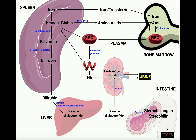The other place for bilirubin diglucuronide to go is the kidneys. There are bacteria in the tubules of the kidneys that are going to convert bilirubin diglucuronide into urobilinogen and urobilin. Urobilin in particular is actually what gives urine its yellow color, because urobilin is a yellow pigment. So heme — at least the ring component of this compound — is really just degraded into other structures that are excreted either in the urine or the feces.